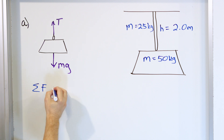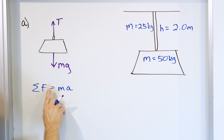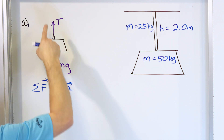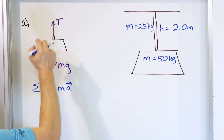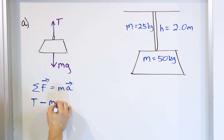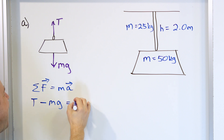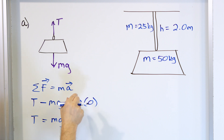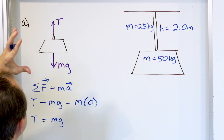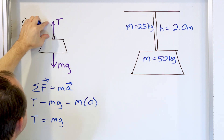The sum of the forces equals mass times acceleration. We know this whole problem is only in the Y direction, so up is positive — tension goes up, mg acts downward — and that equals the mass of the chandelier times its acceleration. But this is not moving; it's just hanging there, so the acceleration is zero. The tension is therefore equal to mg.